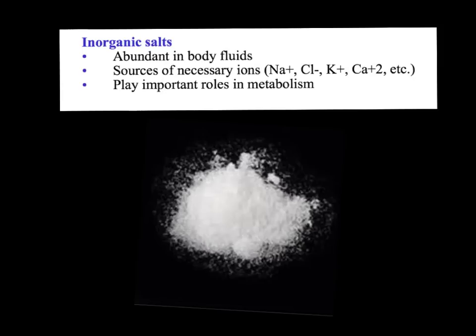Last but not least, we have inorganic salts. Salts usually dissociate and make ions. Think about table salt, NaCl. You can have all kinds of other salts in the body that release potassium ions, calcium ions, etc. All those ions are important in your body — necessary for nerve conduction, nervous impulses, and muscle contraction. All of those small ions are going to be super important as we go through anatomy and learn about the different processes in each body system.